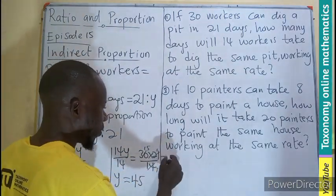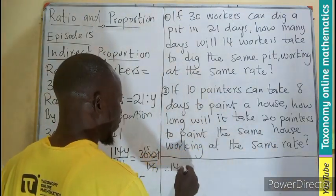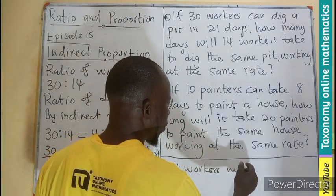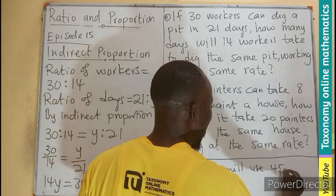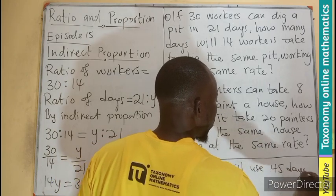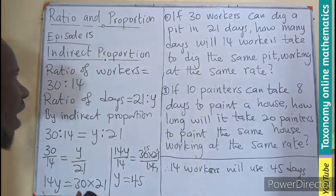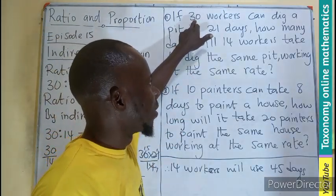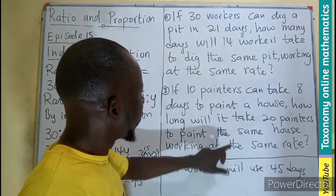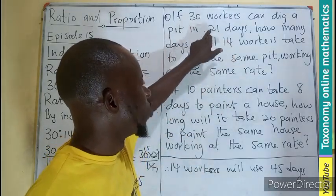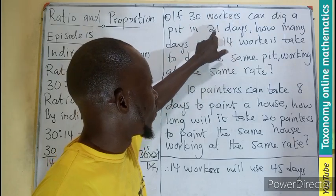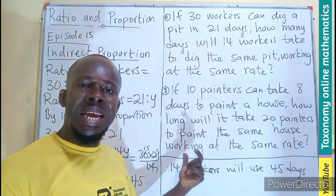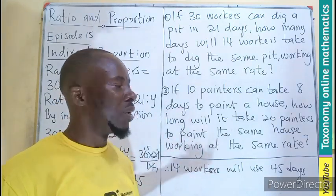So therefore, 14 workers will require 45 days. Let's check: 30 workers have been reduced to 14, therefore 21 days is increased to 45 days. This confirms we are under indirect proportion.